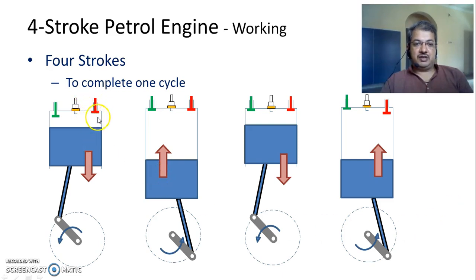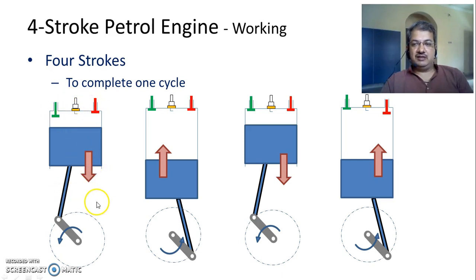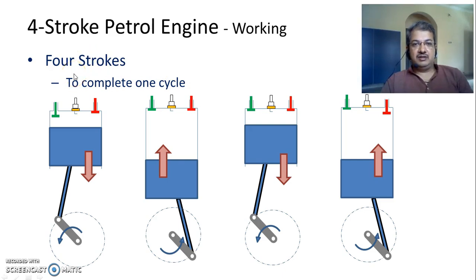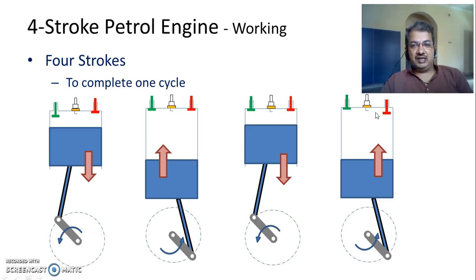In order to understand what a stroke is: the top portion of the cylinder is called Top Dead Centre (TDC) and the lower portion of the cylinder is called Bottom Dead Centre (BDC). When the piston moves from one end to the other end of the cylinder — say from Top Dead Centre to Bottom Dead Centre — that is called one stroke of the piston. In order to complete one working cycle in the case of a four-stroke engine, the piston has to perform four different strokes. It moves four times from one end to the other to complete one thermodynamic cycle — that is why this engine is referred to as a four-stroke petrol engine.